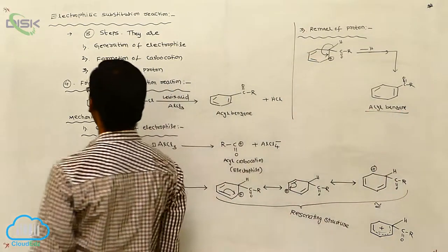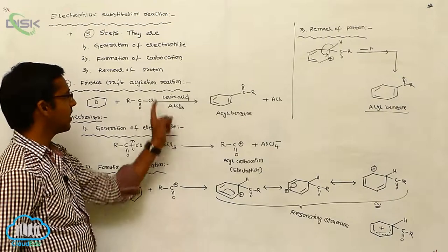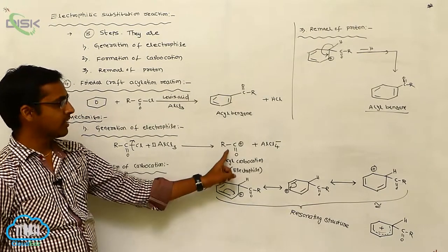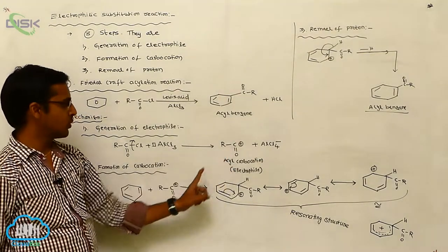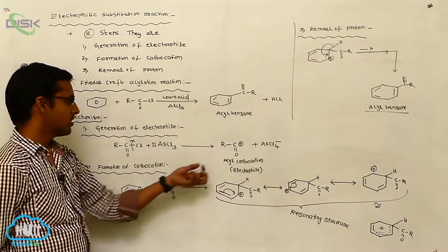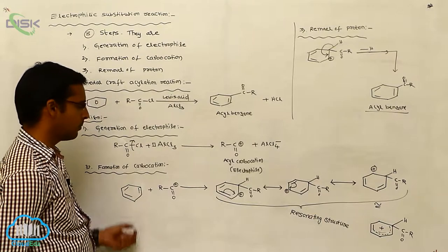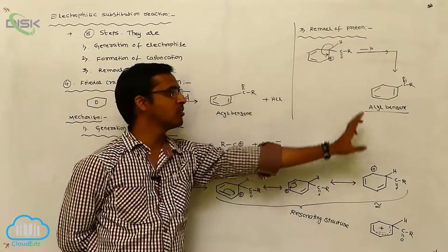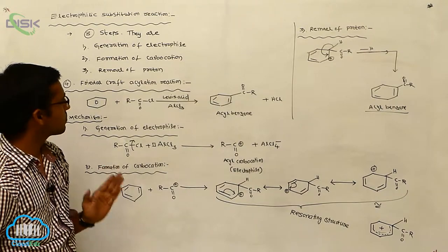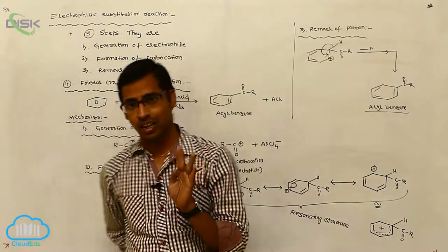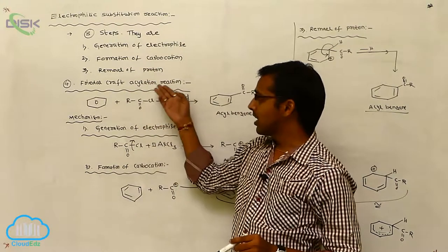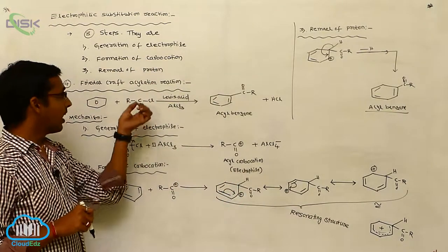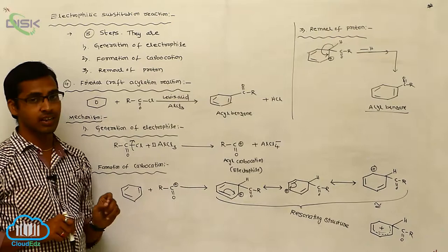In Friedel-Crafts Acylation Reaction, the acylating reagent is acid chloride with Lewis acid. The electrophile is the acyl cation, produced from the Lewis acid. The acyl carbocation attacks benzene, involving resonating structures, and finally removal of proton gives acylbenzene. In electrophilic substitution reactions — chlorination, Friedel-Crafts Acylation, and Friedel-Crafts Alkylation — the electrophile is generated from a Lewis acid.